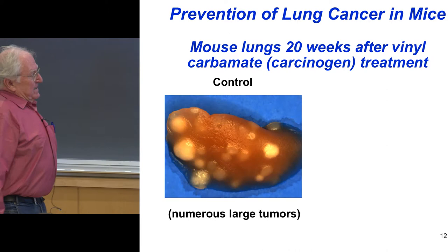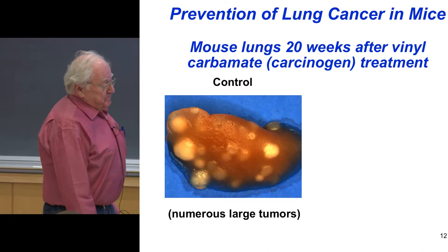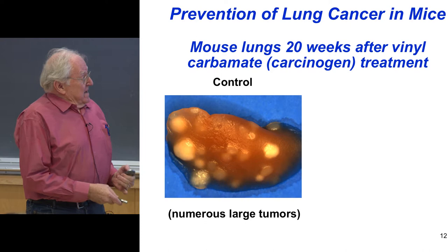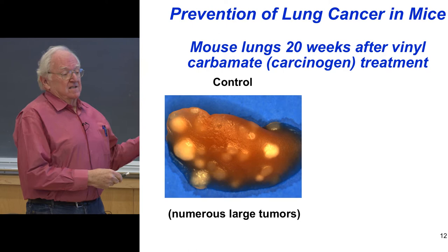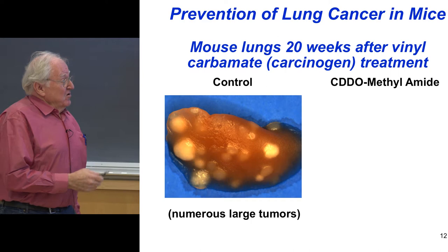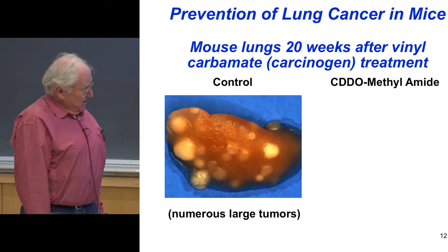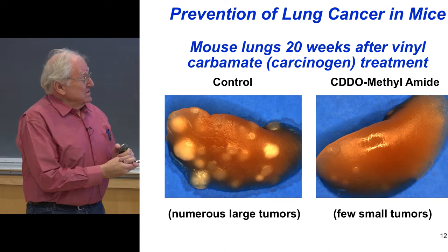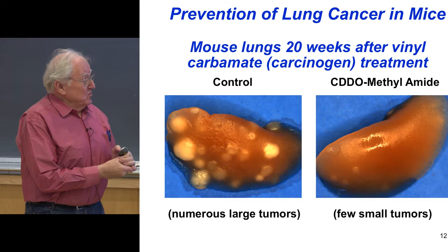This is a mouse lung. The mouse was given vinyl carbamate — a urethane. We talked about the carbamate functional group. After 20 weeks, all of these white lumps are cancer. You can't take it out of the lung without destroying the lung. We talked about CDDO, our magical compound that we synthesized for the first time in 1998. This is a mouse that was given one of our compounds after the same period with vinyl carbamate, and you can see smaller tumors and much fewer in number. We're very excited about these compounds at preventing cancer.